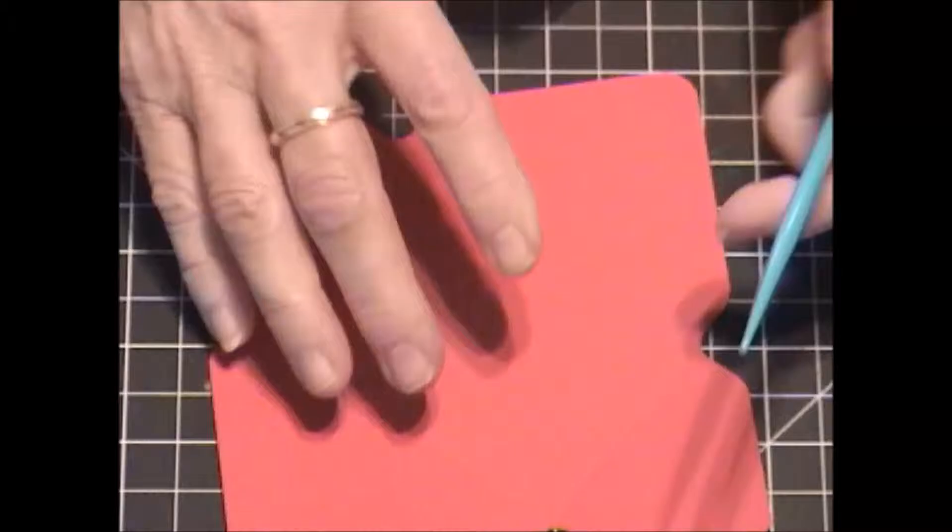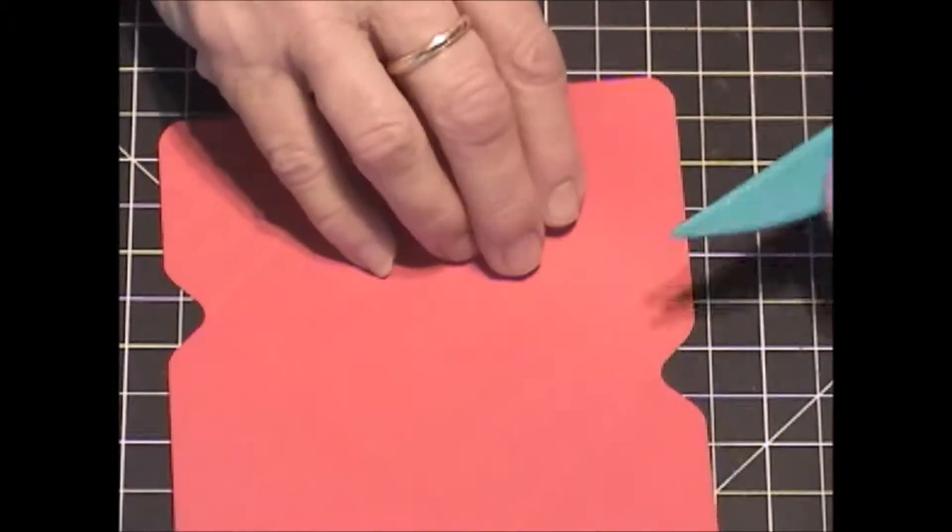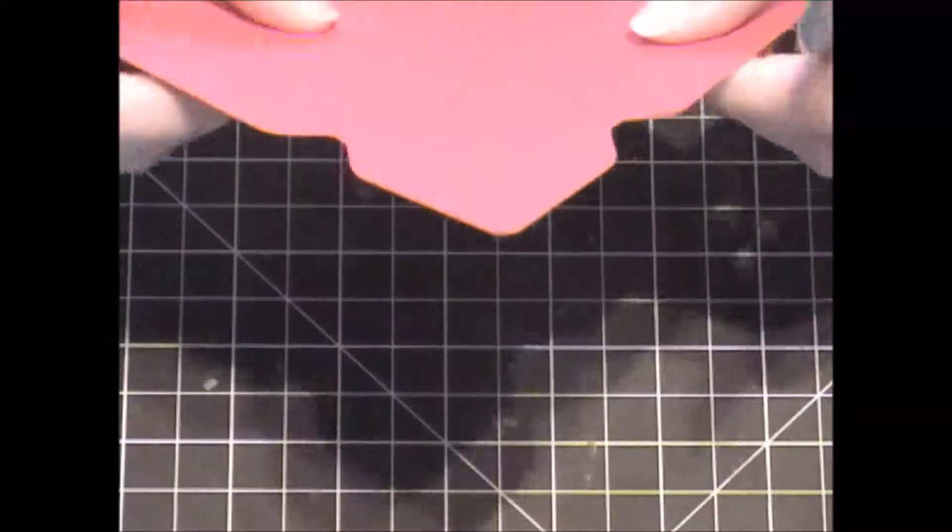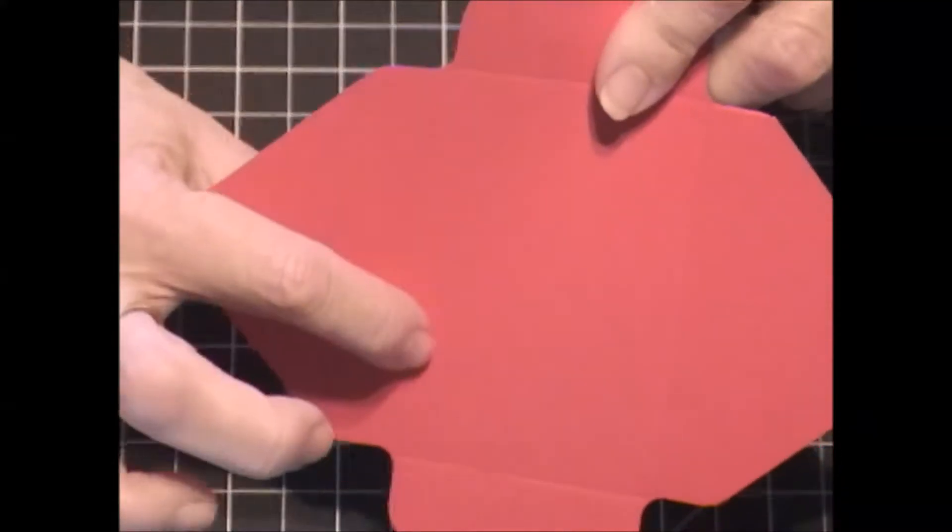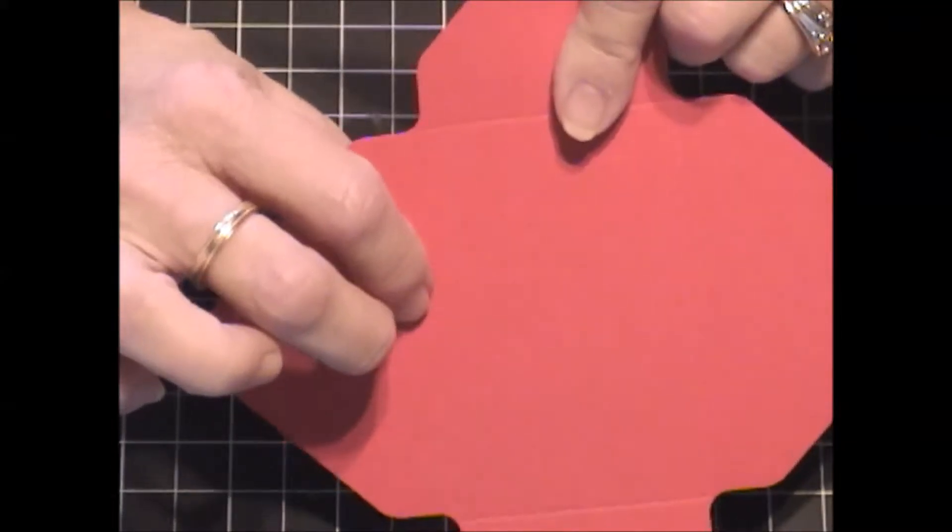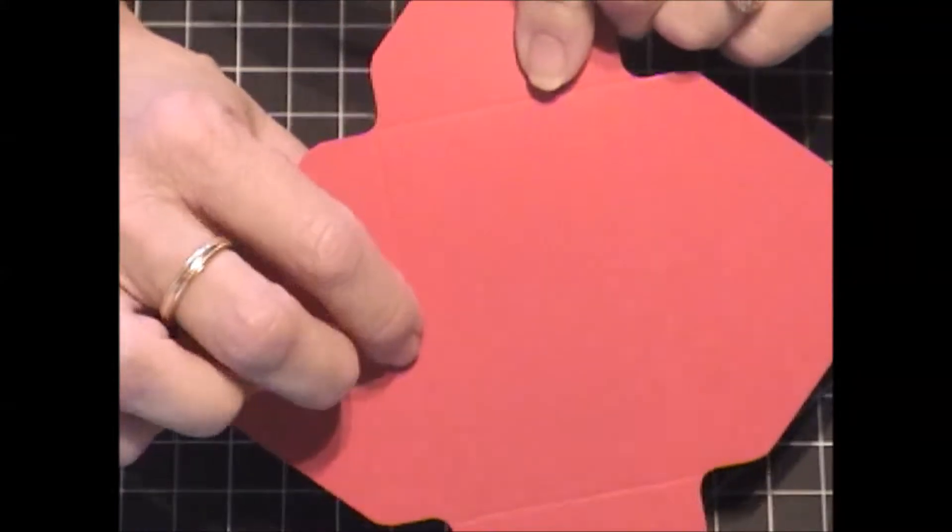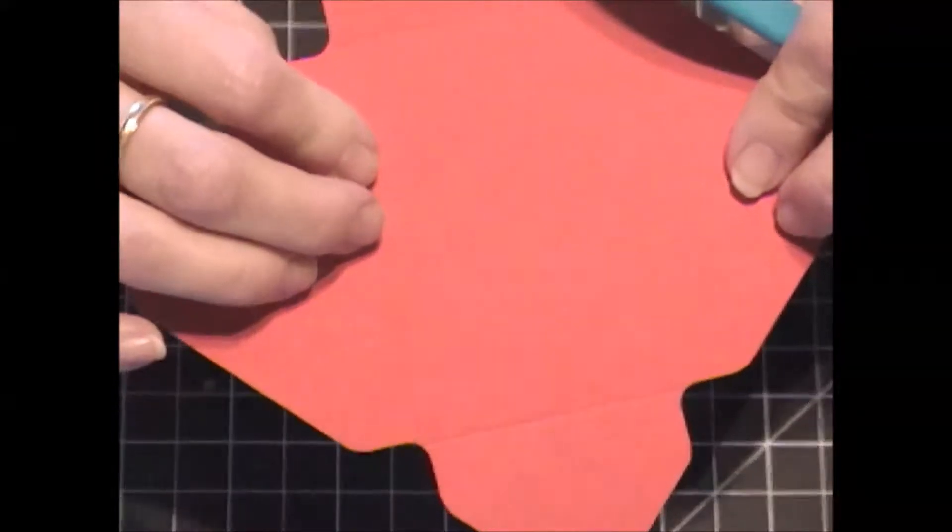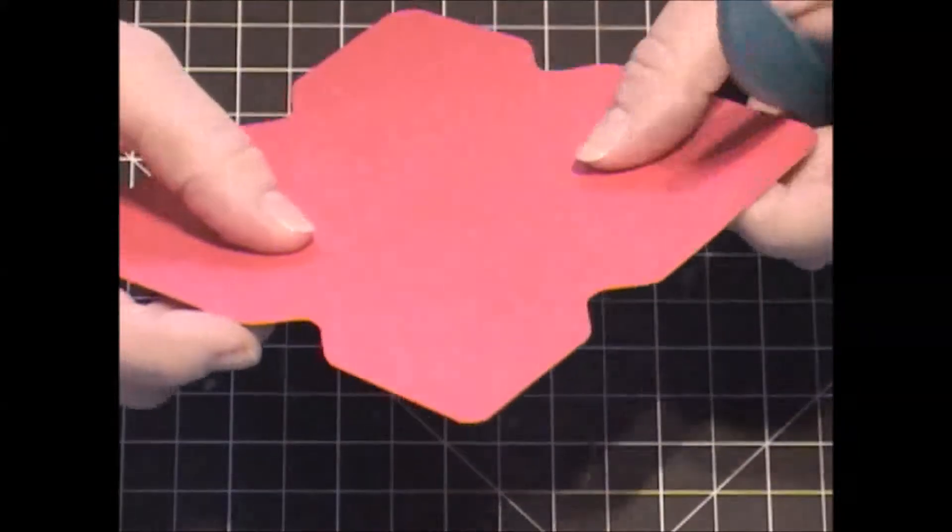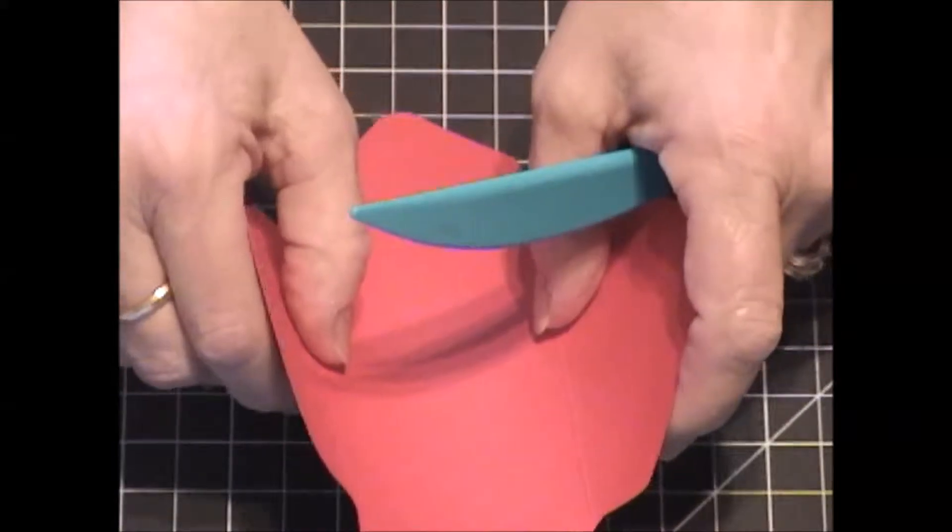And we're going to use our little bone folder here to burnish the score lines. Now, on colored paper, you want your valley, which is where we scored, you can see that there, to the inside. If you're using white or vanilla paper, you want your valley to the outside.